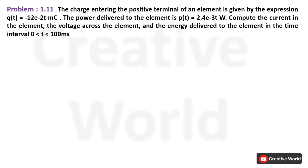Problem 1.11: the charge entering the positive terminal of an element is given by the expression q(t) = -12e^(-2t) millicoloumb. The power delivered to the element is p(t) = 2.4e^(-3t) watt. Compute the current in the element, the voltage across the element, and the energy delivered to the element in the time interval 0 to 100 milliseconds.